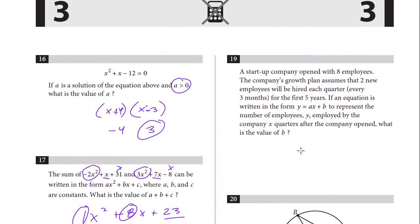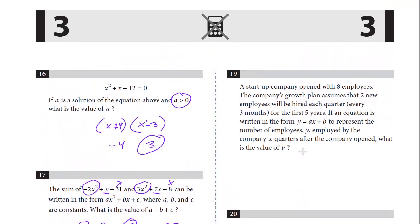Let's take a look at the last two, 19 and 20. A startup company opened with eight employees. The company's growth plan assumes that two new employees will be hired each quarter, every three months, for the first five years. If an equation is written in the form Y equals AX plus B to represent the number of employees Y employed by the company X quarters after it opened, what's the value of B? This is another real-life situation set to a linear equation. There's really a shortcut to this problem. I'm going to go through it just to explain and review the concept.